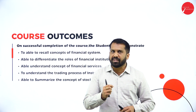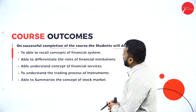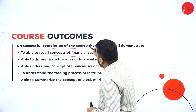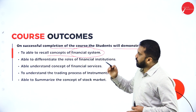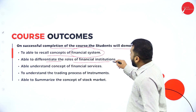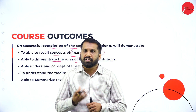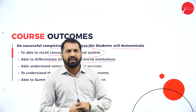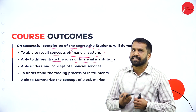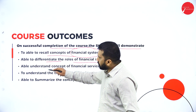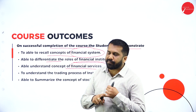The learning outcomes on successful completion of this course: first, you will be able to recall the concept of the financial system and how financial systems work and are interrelated. Second, you will be able to differentiate the roles of financial institutions — all banks, institutions under civil guidance, and sectors providing loans, finance, and debt all come under financial institutions.